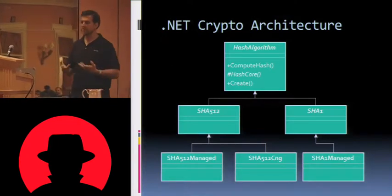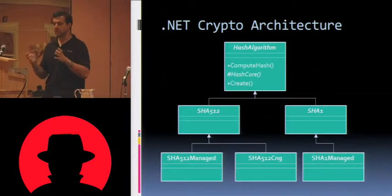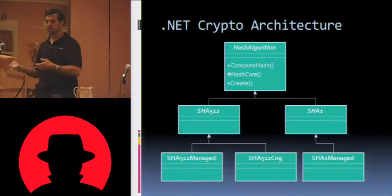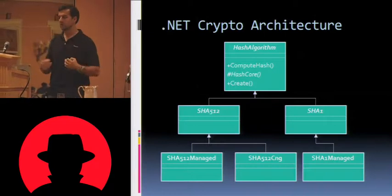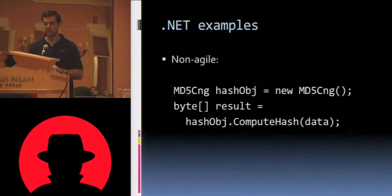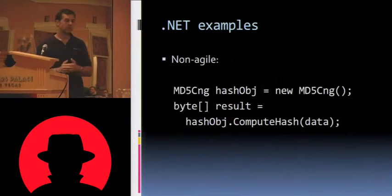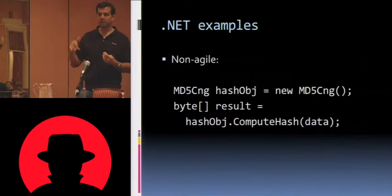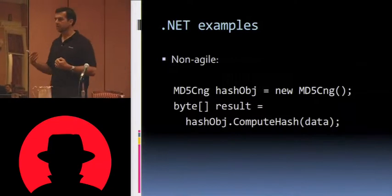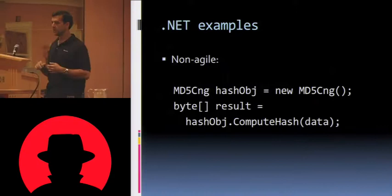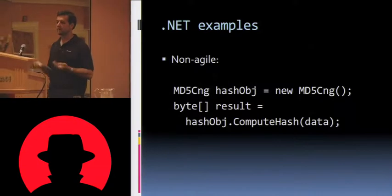The particular concrete classes that are instantiable derive from the abstract class of the algorithm. The managed code implementation of SHA-512 is SHA-512 Managed, which derives from SHA-512. SHA-512 CNG is another implementation — the CNG implementation that derives from SHA-512. These are the classes that are concrete and instantiable, and this is how most people use them: they pick the particular implementation of the algorithm they want, create a reference to it, new it up, and start using it.